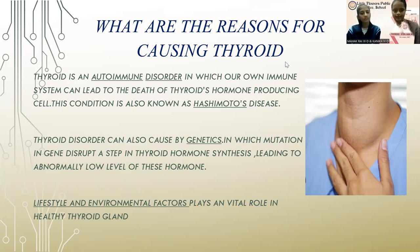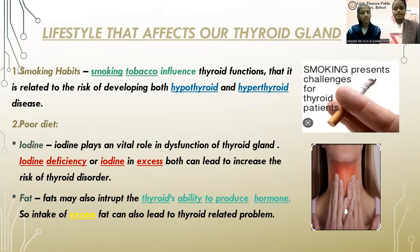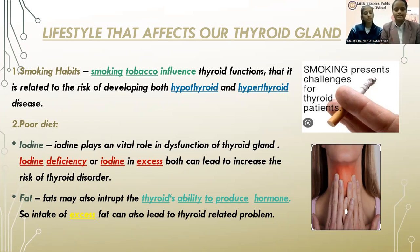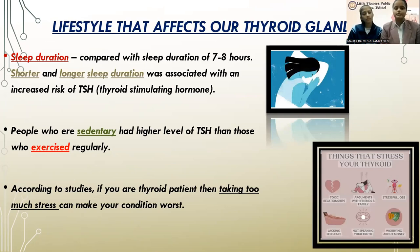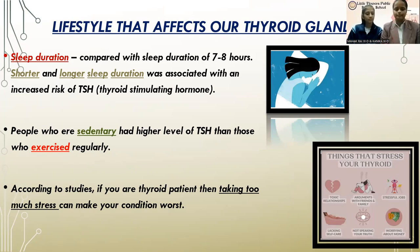Lifestyle factors that affect our thyroid gland. Smoking: tobacco influences thyroid function and is related to the risk of developing both hypothyroid and hyperthyroid disease. Poor diet — Iodine: iodine plays a vital role in thyroid dysfunction; both iodine deficiency and excess iodine can increase the risk of thyroid disorder. Fats: excess fat intake may interrupt the thyroid's ability to produce hormones. Sleep duration: compared with 7–8 hours of sleep, shorter or longer sleep duration is associated with increased risk of TSH abnormality. People who are sedentary had higher TSH levels than those who exercised regularly. Excess stress can also worsen the condition in thyroid patients.